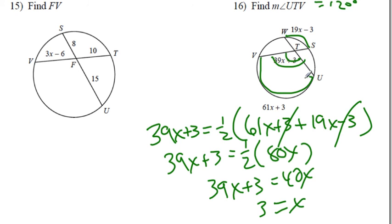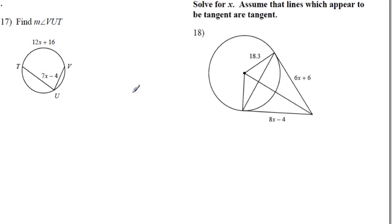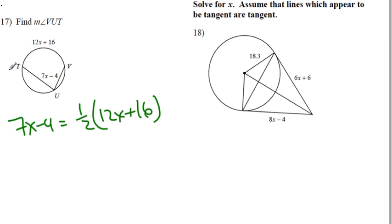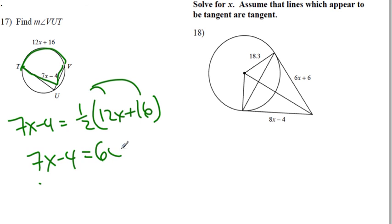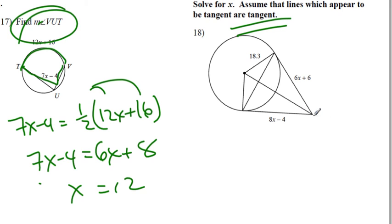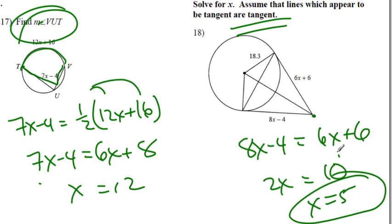Two more: the inscribed angle equals half the intercepted arc, so 7x − 4 = 6x + 8, giving x = 12. Don't forget to plug it back in. The last one: with one external point and two tangents, the two tangent lengths are equal. So 2x = 10, giving x = 5. And that's everything for the review — it went quickly but covers all the material. This is Mr. Kelly. Remember: it's nice to be important.